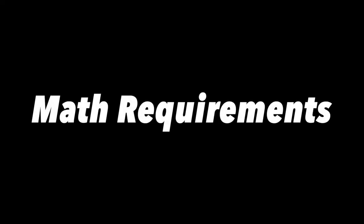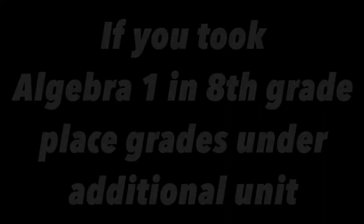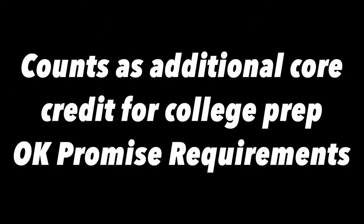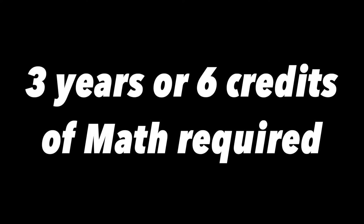Now look at your transcript and find the math classes you have taken. If you took Algebra 1 in 8th grade, put those grades on the blanks under additional unit. This will count as your additional core credit for the College Prep Oklahoma Promise requirement. All students need 3 years of math in high school or 6 credits. Even if you took Algebra and or Geometry in middle school, you are still required to complete 3 years of math or 6 credits in high school.